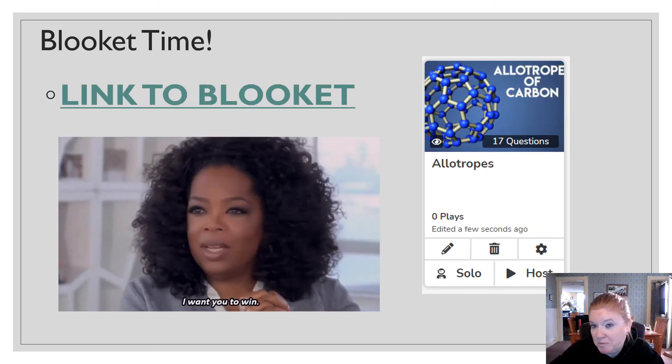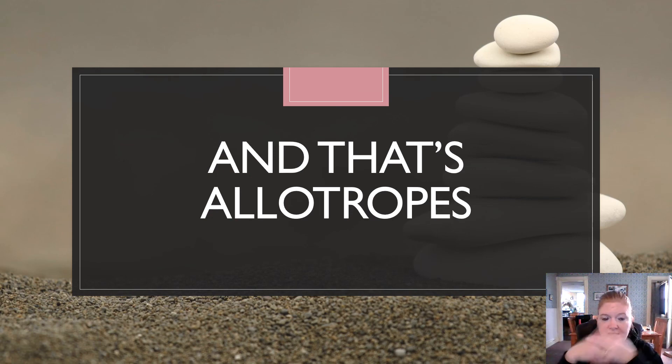Okay. And there you have it. We only do a blue kit in class, but that's it. That's allotropes. Again, this is a little bit of a shorter lesson, and hopefully you have learned so much about the periodic table. Hopefully today you did learn something new.